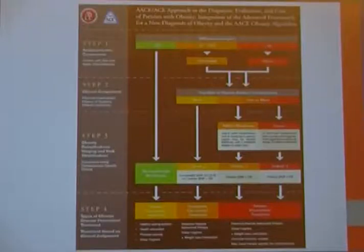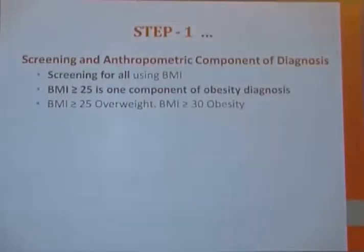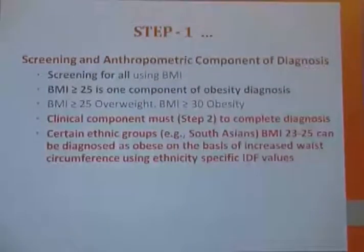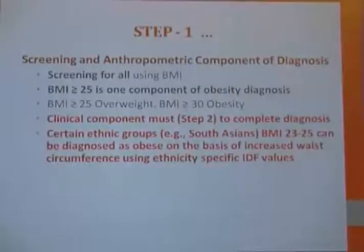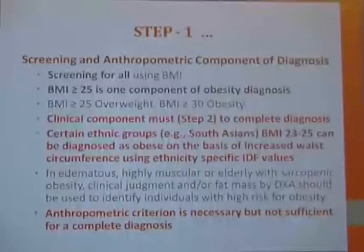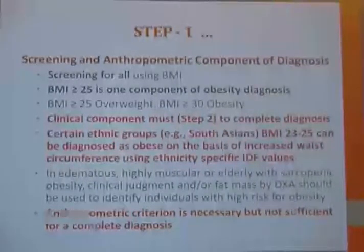The flowchart of all four stages shows that screening with BMI — if more than 25 — is one component of the obesity diagnosis. BMI more than 25 is overweight and BMI more than 30 is obesity by international criteria, not Indian criteria. The clinical component completes the diagnosis. Certain ethnic groups like South Asians may use BMI 23–25 criteria depending on increased waist circumference. In special cases like highly muscular or elderly persons with sarcopenic obesity, DEXA can identify fat mass, as anthropometric criteria alone are necessary but not sufficient.